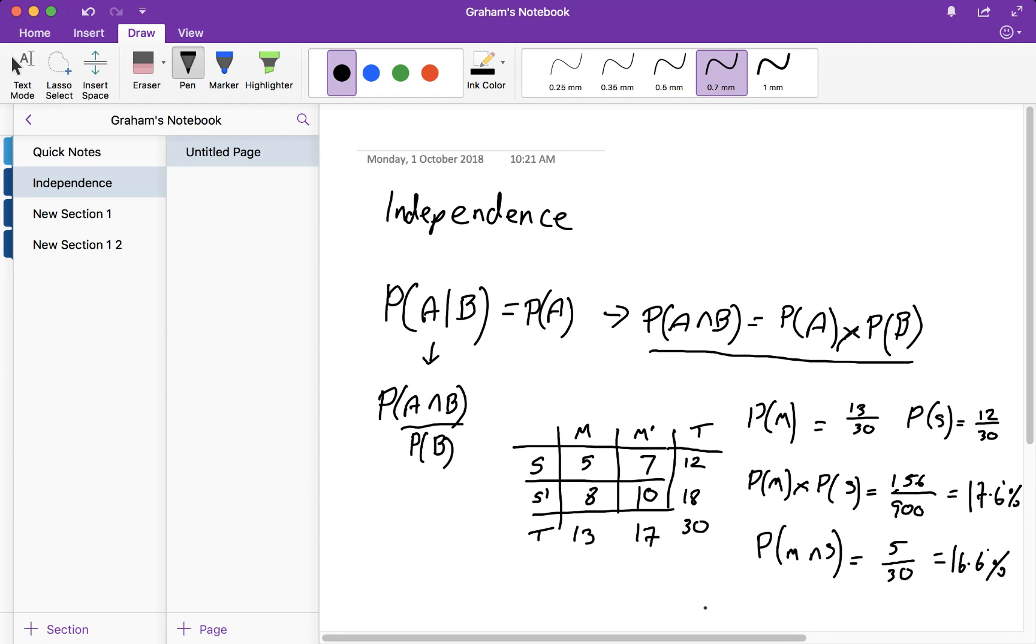Now because the probability of music and sport is not equal to the probability of music times the probability of sport—it's an equal sign with a line going through it—I can say they are not independent. The crucial thing is you must show those calculations, otherwise it's not going to be sufficient for you to get the marks at level 3. So that's independence.